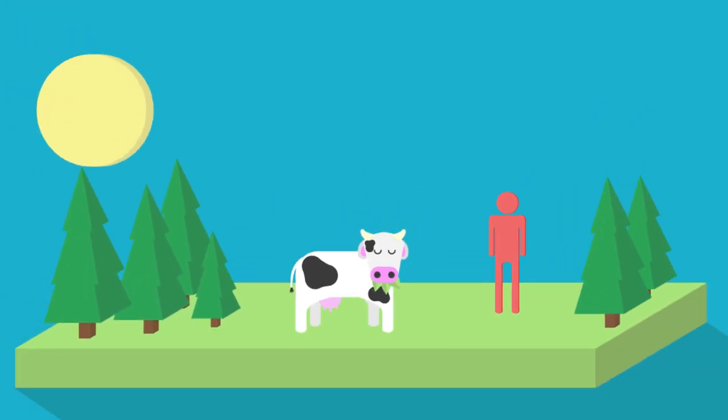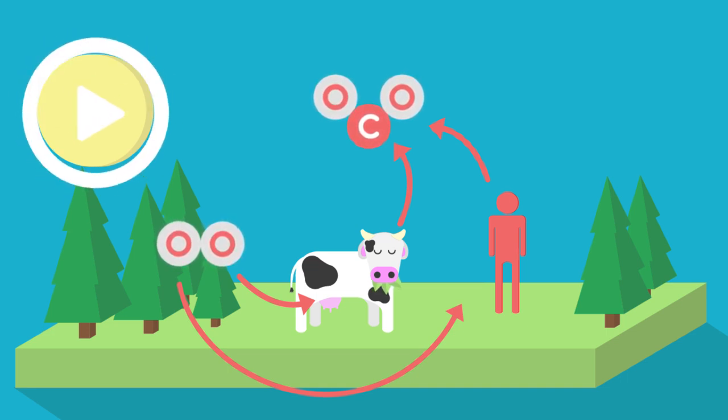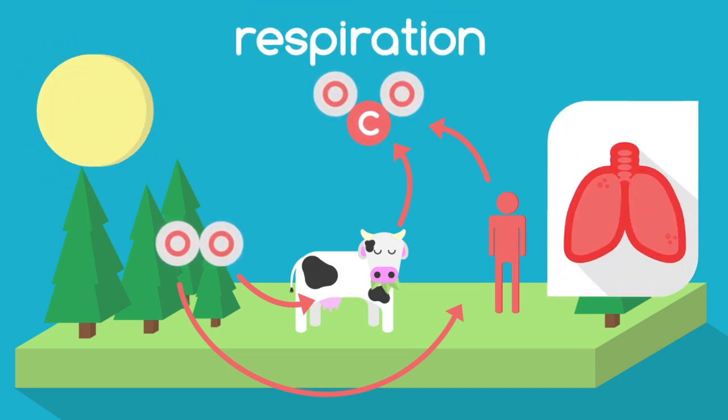To obtain energy for all these living processes, plants and animals take in oxygen and rejoin it with the carbohydrates, so returning the carbon dioxide to the atmosphere. Do you remember what this process is called? Pause the video. This process is called respiration.